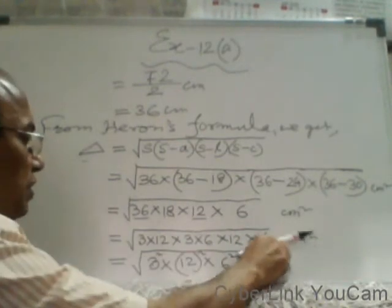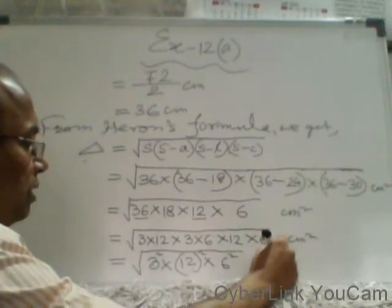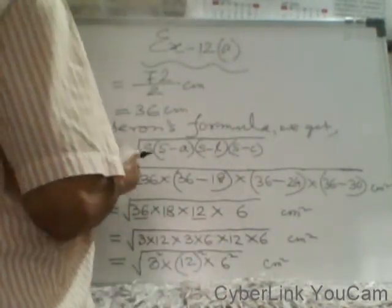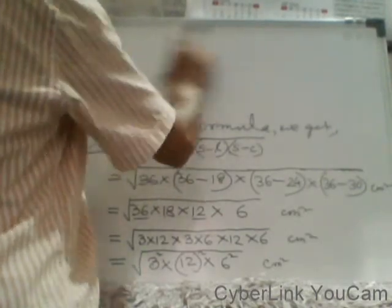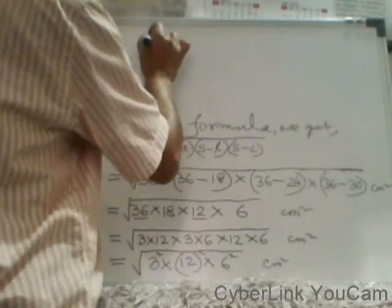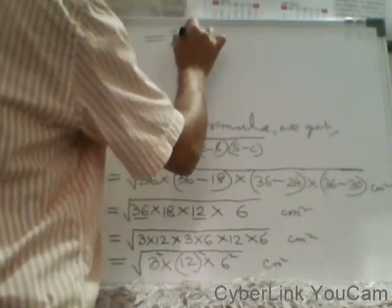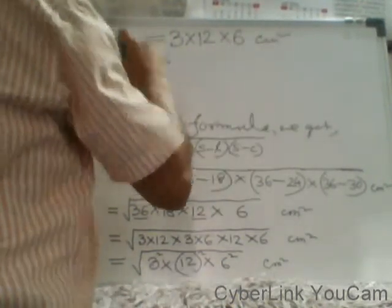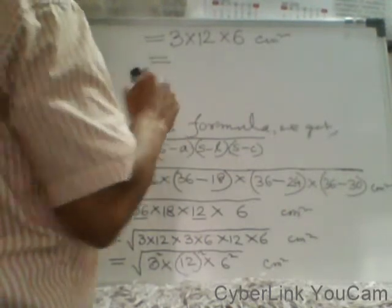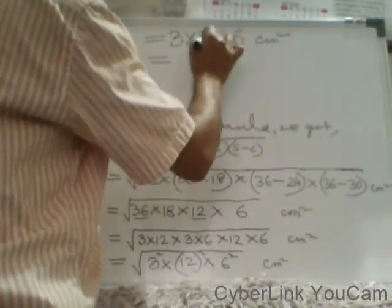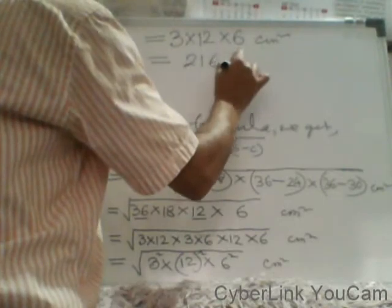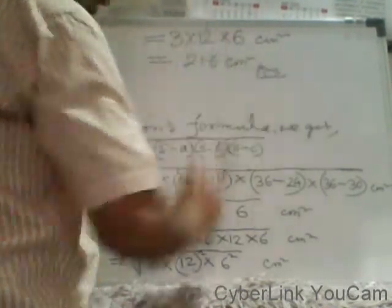Since square and root cancel each other, you get 3 × 12 × 6 centimeter square, which equals 216 centimeter square. So the area of the triangle is 216 cm².